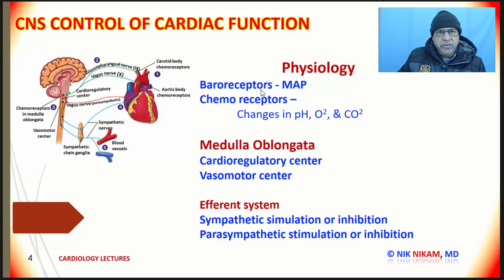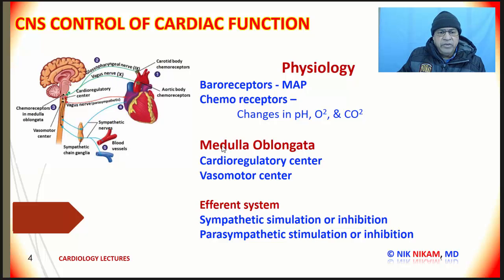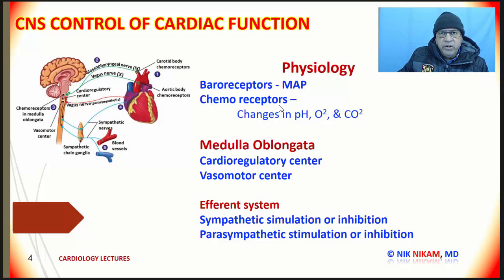Let us talk about the physiology of central nervous system control of the heart. The baroreceptors, as the name indicates, respond to changes in blood pressure. If blood pressure goes up, it stretches the aorta and the carotid sinus, sending efferent impulses through the glossopharyngeal nerve and the vagus nerve to the medulla. In the medulla, the cardio-regulatory centers — namely the cardio-accelerator center and cardio-inhibitory center — along with the vasomotor center, regulate cardiovascular functions through sympathetic or parasympathetic stimulation or inhibition. The chemoreceptors, on the other hand, respond to changes in pH, oxygen saturation level, and carbon dioxide pressure in the blood.